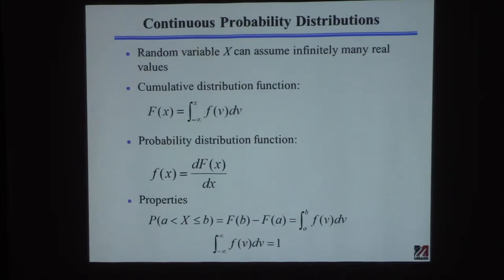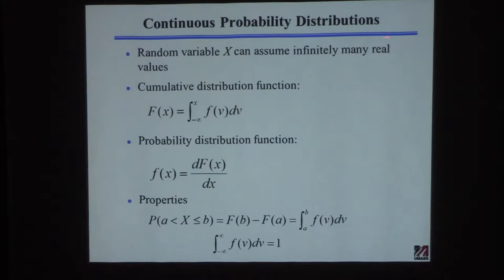So that's the binomial distribution and the Poisson distribution. The next thing we're going to talk about is the normal distribution, which is an example of a continuous probability distribution. We know a continuous distribution has a random variable X that can assume infinitely many real values — things like temperature, pressure, flow, whatever real variable you're interested in.